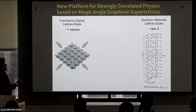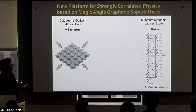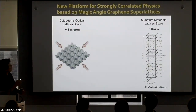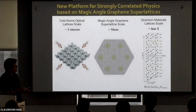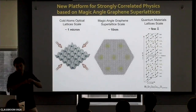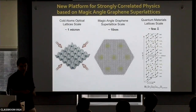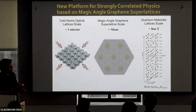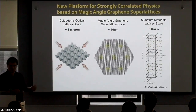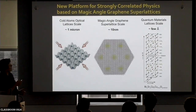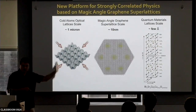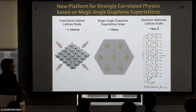So we have two platforms to study correlated physics: one is quantum materials themselves, and the other is cold atoms in optical lattices. What I want to tell you about today is magic-angle graphene superlattices. In quantum materials, the typical superlattice scale is of order an angstrom or a few angstroms. In cold atoms, it's about a micron. Magic-angle graphene is in between — two orders of magnitude from either — the typical superlattice length scale.